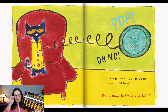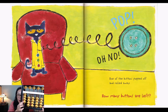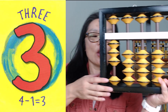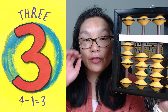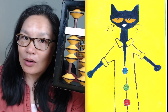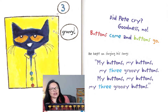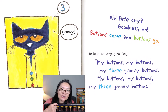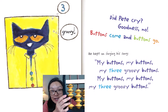Boop! Oh no! One of the buttons popped off and rolled away. We had four buttons and one popped off, so now how many buttons are left? We have three buttons. We had four, take away one, now there are three. We have three groovy buttons — red, green, and blue. Did Pete cry? Goodness no! Buttons come and buttons go. And he kept singing his song — my buttons, my buttons, my three groovy buttons.